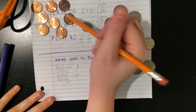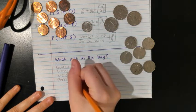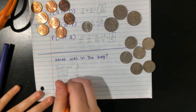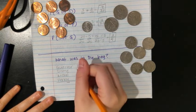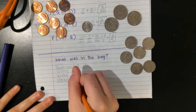And then how many pennies? One, two, three... ten. There were ten pennies. So there were actually 20 coins total.